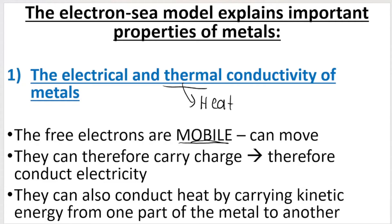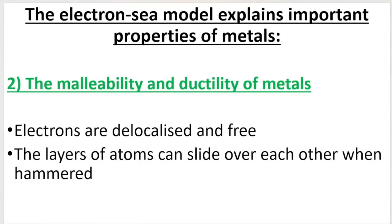And another property that the electron sea model can explain is the malleability and ductility of metals. Remember, to be malleable, that's when we can flatten a metal into a thin sheet. And ductility is when we can stretch it or roll it into a wire. You need to know that. And why can we do this? Because again, electrons are delocalized, they are free to move. And that means that these atoms can slide over each other when they're hammered. That's how we can press metal flat like aluminum, like tin foil, or stretch it into wires like copper, the ductility.